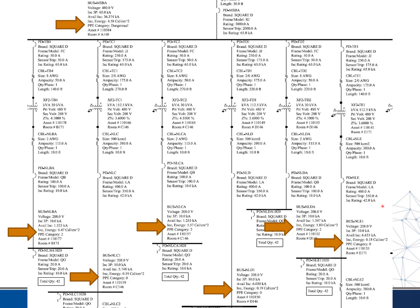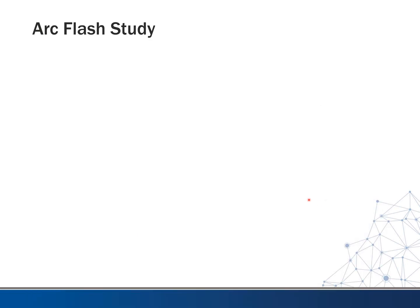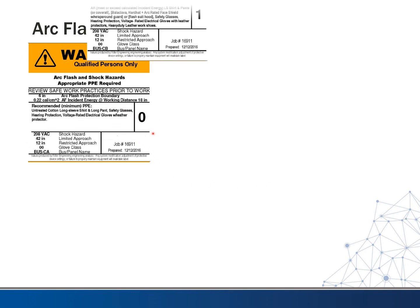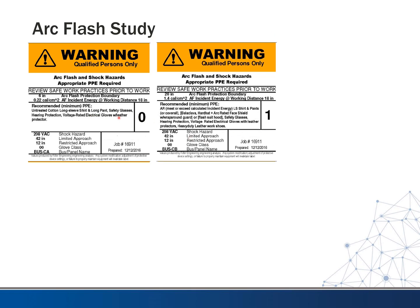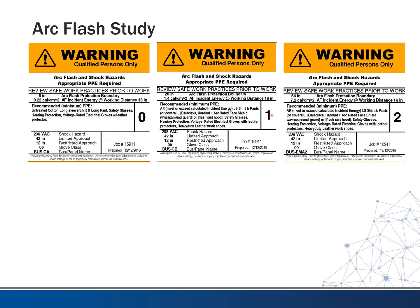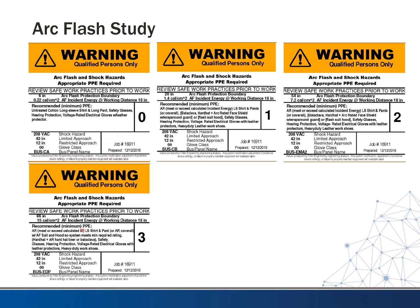So what do these categories mean and what do the labels look like? These are the types of labels you'd see — category zero, category one. As you go from one to the other, the required PPE starts to describe more and more equipment you have to wear. You can see the calculations showing how many calories per centimeter squared and what's the safe working distance before you need PPE. Category two — these numbers go up and more and more PPE is required.